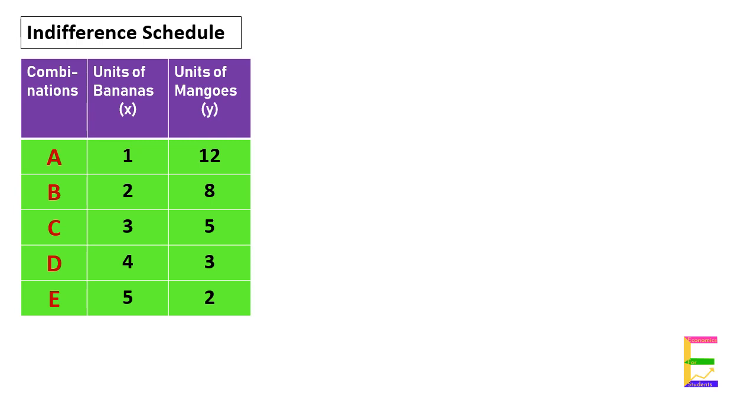These combinations give equal satisfaction to the consumer. In order to represent this schedule graphically, let us measure units of bananas on the x-axis and units of mangoes on the y-axis.